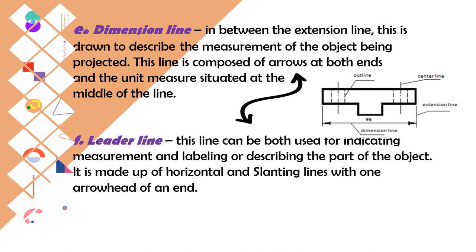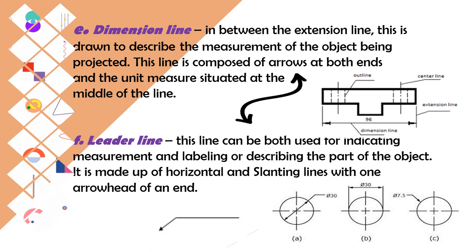The next one is the leader line. A leader line can be used for both indicating measurements and labeling or describing a part of the object. It is made up of horizontal and slanting lines with one arrowhead at the end. The arrowhead points to the specific part, and the horizontal line carries the label. For example, if a measurement of 7.5 needs to be indicated, using a leader line makes it cleaner and clearer than placing it directly on the object.